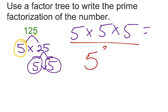So it's 5 cubed, and actually 125 is one of those numbers that happens to be one of those perfect cubes. 5 cubed is 125.